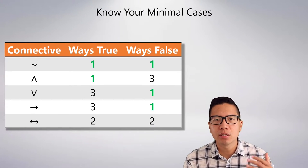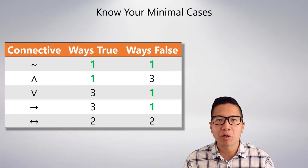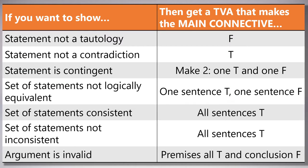It's really helpful to know your minimal cases. You never want to be working on something that isn't a unique case unless you have no other choice. Here's an overall summary of semantic properties as interpreted into shortened truth tables. To show that a statement is not a tautology, you need to show the main connective is false. For not a contradiction, the main connective must be true. For contingency, you'd make two shortened truth tables — one TVA where the statement is true, one where it's false. You cannot show logical equivalence in a shortened truth table, but you can show they're not logically equivalent by getting a TVA where the sentences have different truth values. Consistency requires all sentences in the set to be true. To show invalidity, you need a TVA where all premises are true and the conclusion is false.